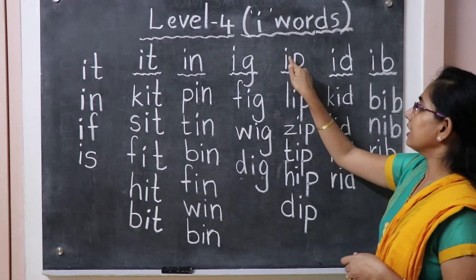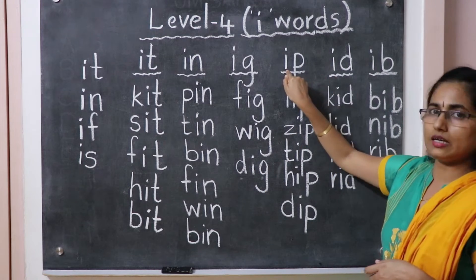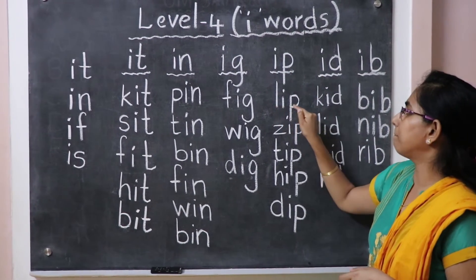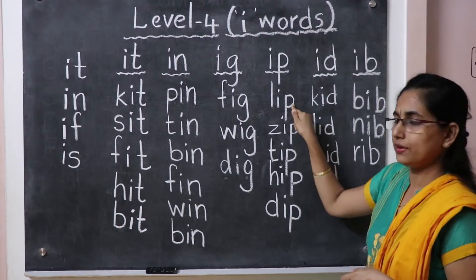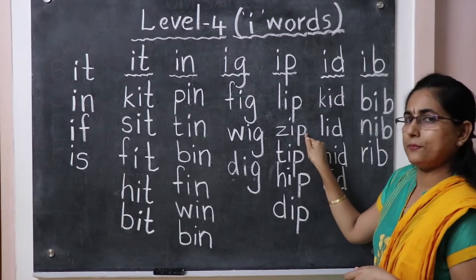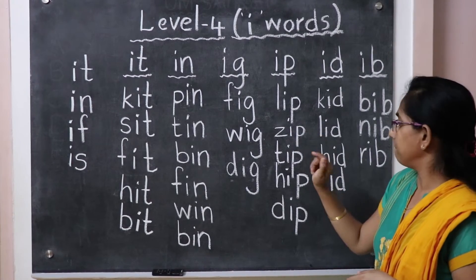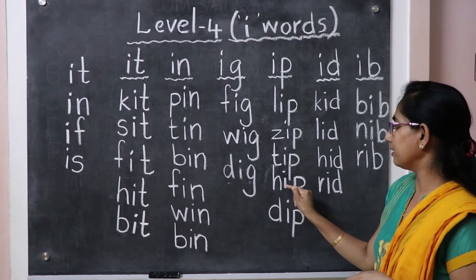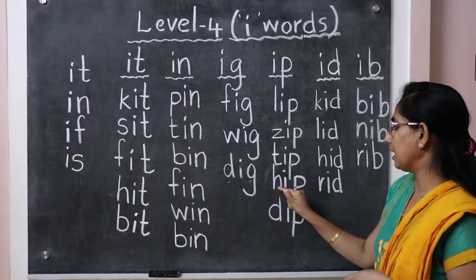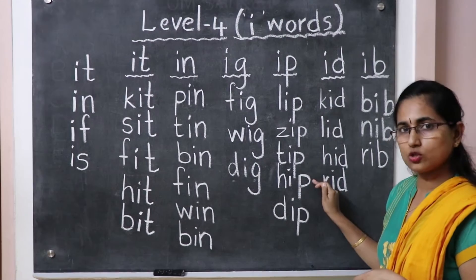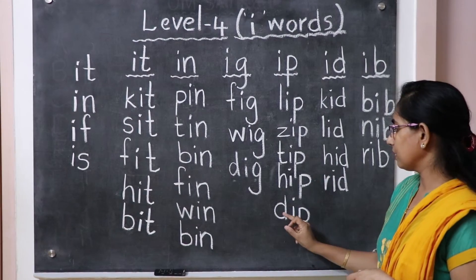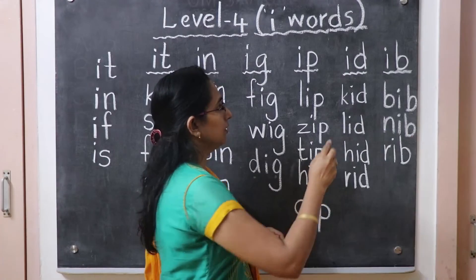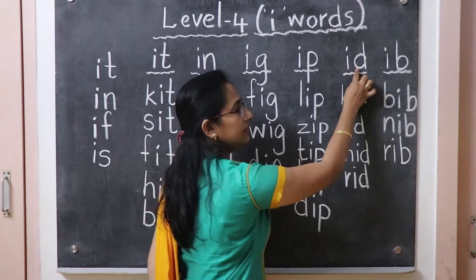Next, -ip words. I is the first letter, then -ip. L-ip: lip. Z-ip: zip. T-ip: tip. H-ip: hip. D-ip: dip.